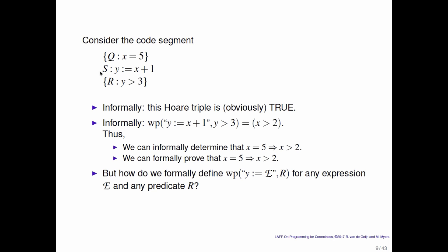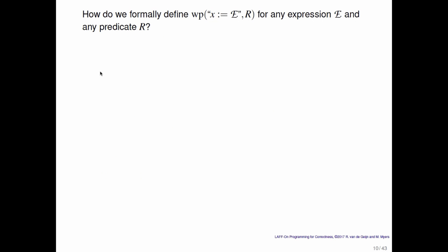But how do we formally define the weakest precondition of some expression being assigned to y? The expression here is denoted by the funny-looking e. If we want to end up in a state where r is true for any expression e and any predicate r. If the expression e is an invalid expression, then your program will abort, and if the program aborts, then it will not complete in a finite amount of time, and therefore it will never reach the point where you want r to be true. We need a way of saying the expression must be true, and for this we introduce the function valid of e.